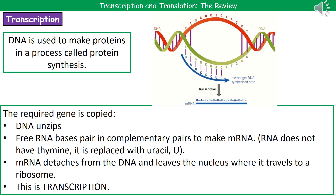Once we've gone along our actual gene and made our mRNA strand, it's going to detach from the DNA. Then it leaves the nucleus through one of the pores and travels to a ribosome. That first step is called transcription — if you think about it like writing a code, that's basically what we're doing. We've written a code in mRNA from our DNA.